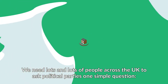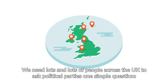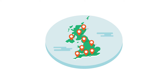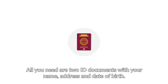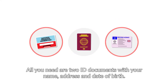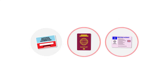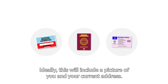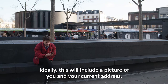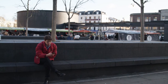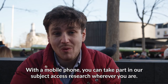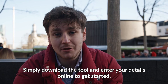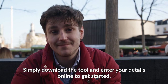Our plan is to use that tool to shake up political campaigning across the UK, and we need your help. We need lots and lots of people across the UK to ask political parties one simple question: who do you think we are? It's easy to do a subject access request and totally free. All you need are two ID documents with your name, address, and date of birth — ideally including a picture of you and your current address. With a mobile phone you can take part in our subject access research wherever you are. Simply download the tool and enter your details online to get started.